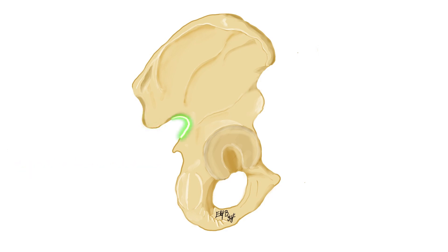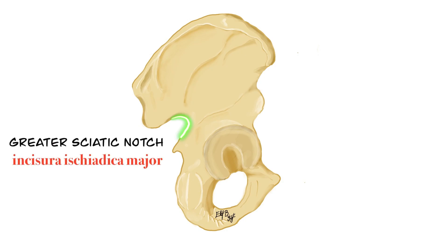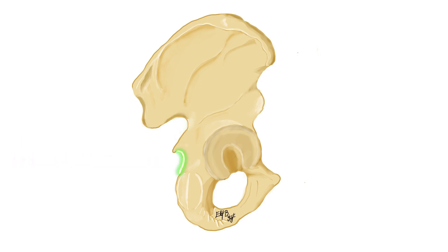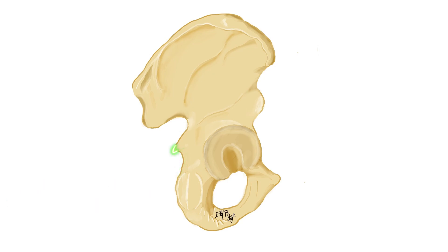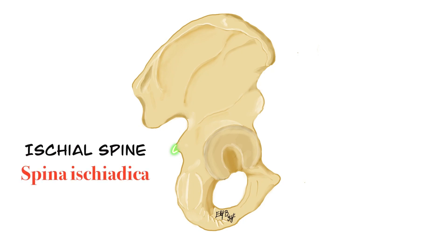Posterior to the ala osis ilii, the major notch is named the greater sciatic notch, also called incisura ischiadica major in Latin. Incisura means notch while major means greater. Inferior to the incisura ischiadica major, there is the lesser sciatic notch, or incisura ischiadica minor in Latin. Minor means lesser. Between the greater and lesser sciatic notch, there is a protrusion known as the ischial spine, or spina ischiadica in Latin.